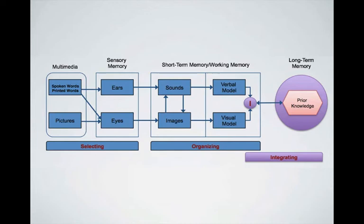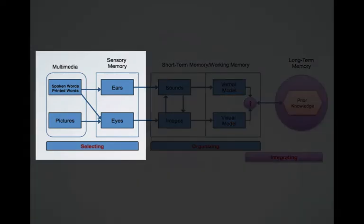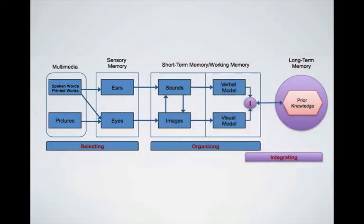The three important cognitive processes that we see demonstrated here is first selecting, selecting words and images, paying attention to relevant words and images in the material.